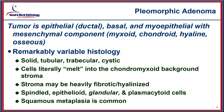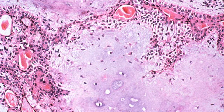The tumor is epithelial and basal with myoepithelial cells set within a mesenchymal chondromyxoid background, with remarkable histologic variability — hence the name pleomorphic. Cells melt into the background chondromyxoid matrix material, sometimes with a heavy stromal sclerotic background containing spindled, epithelial glandular, and plasmacytoid cells. Squamous metaplasia is also quite common.